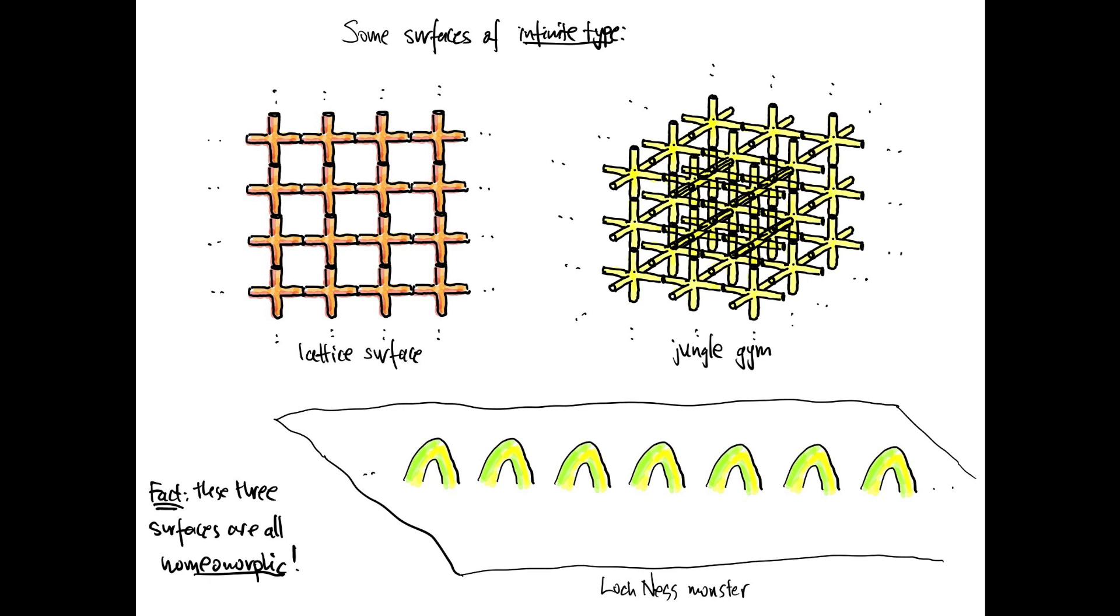Here are some more surfaces of infinite type. The lattice surface is doubly periodic and the jungle gym is triply periodic. Both of them have infinite genus and one end. And here's another picture of the Loch Ness monster where the end has been stretched out horizontally. So that becomes the end of the horizontal plane. In fact, these three surfaces are all homeomorphic. See if you can figure out why.